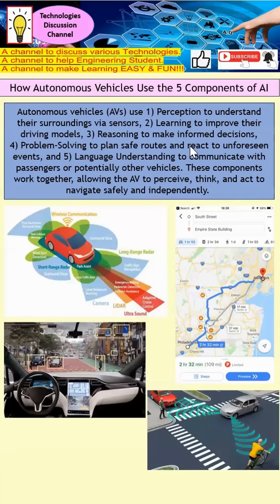The AV is also able to react to unforeseen events. For example, if there is a traffic jam, Google Maps will prompt you to take an alternative route to avoid it. Last but not least is language understanding, which involves communicating with the passenger and also potentially other vehicles.